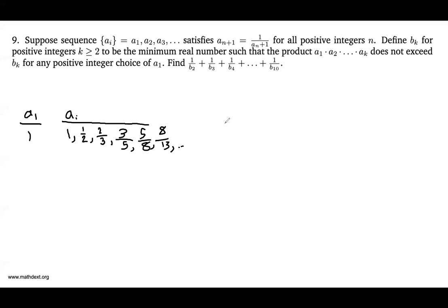It does appear that if you have a fraction m over n, and you apply this to the a sub n plus 1, you get n over m plus n. And in general, no matter what m over n is, this will be true, because this will turn into 1 over m over n plus 1, which is equal to n over m plus n.